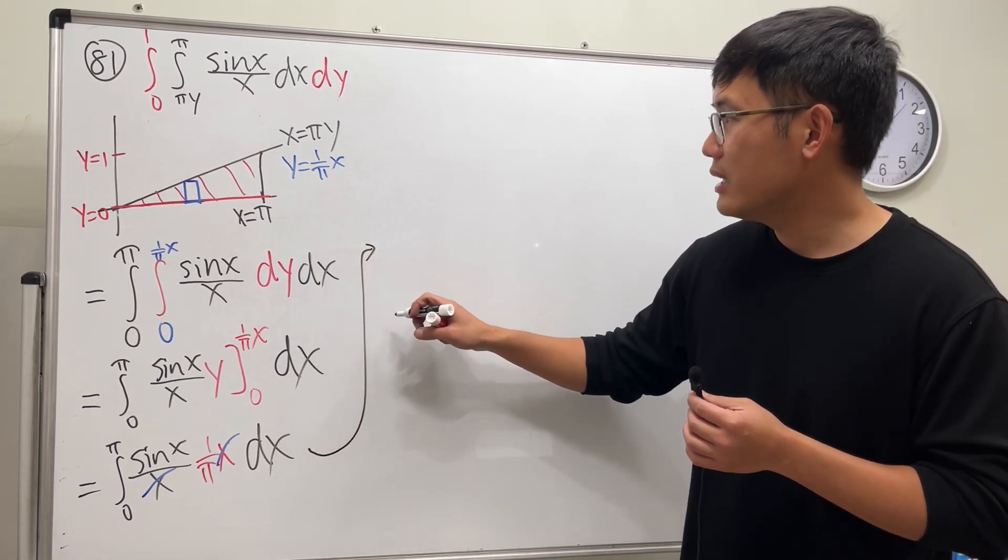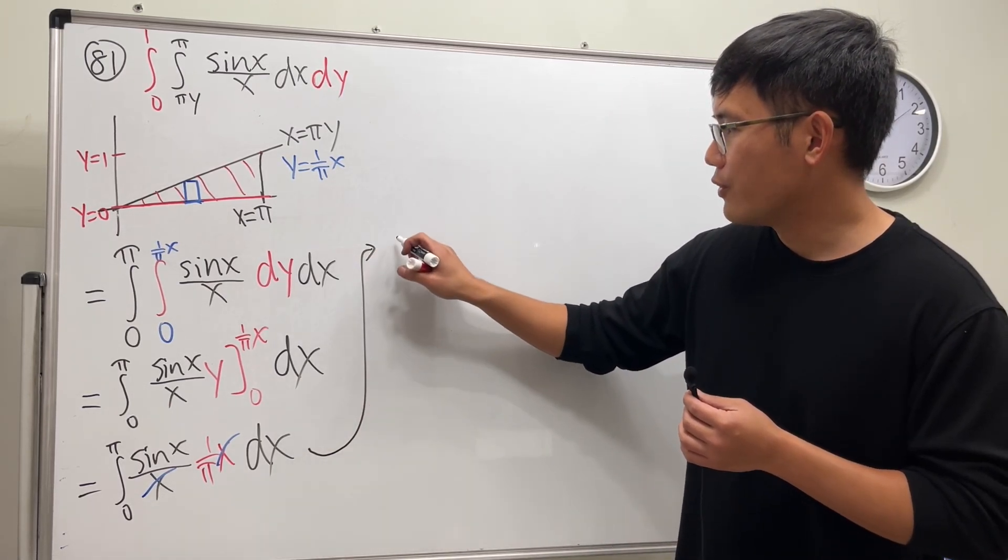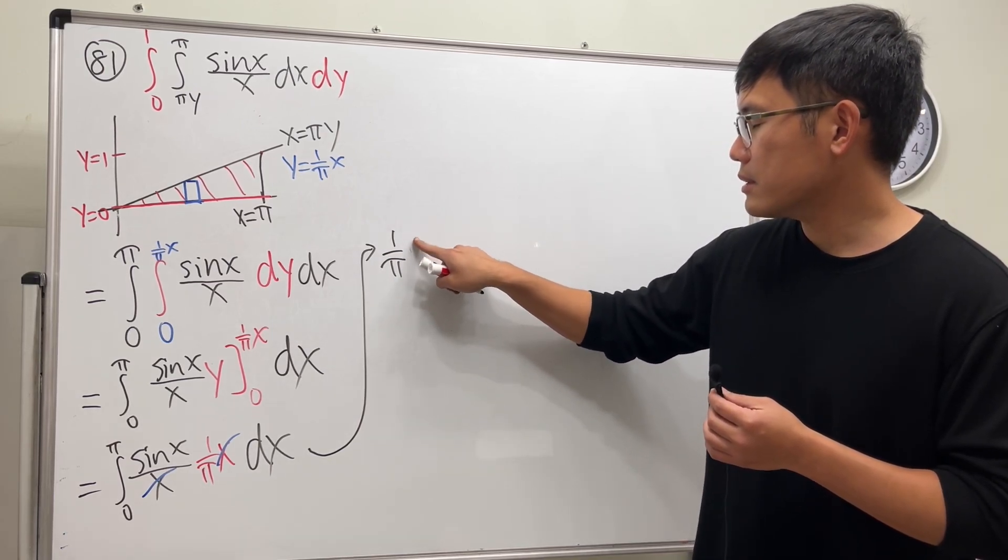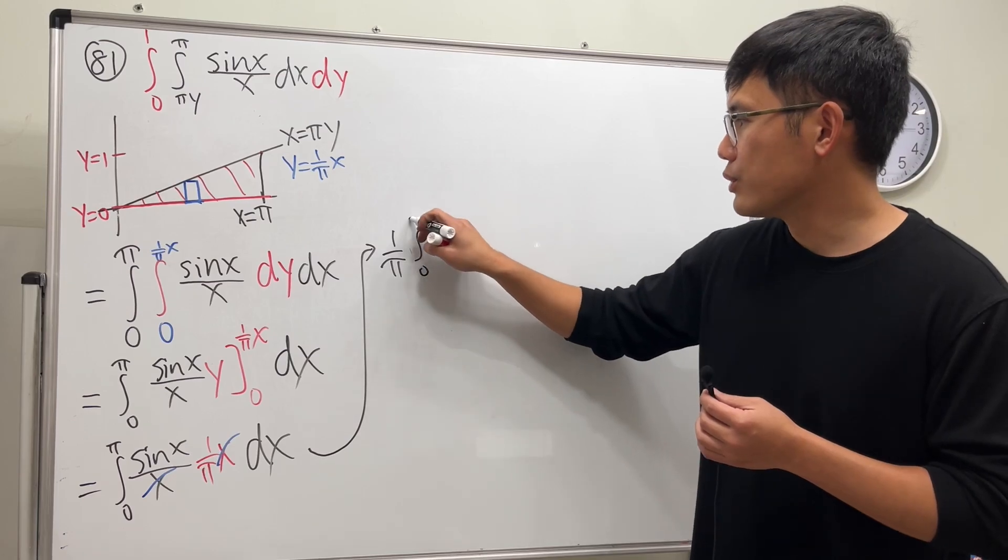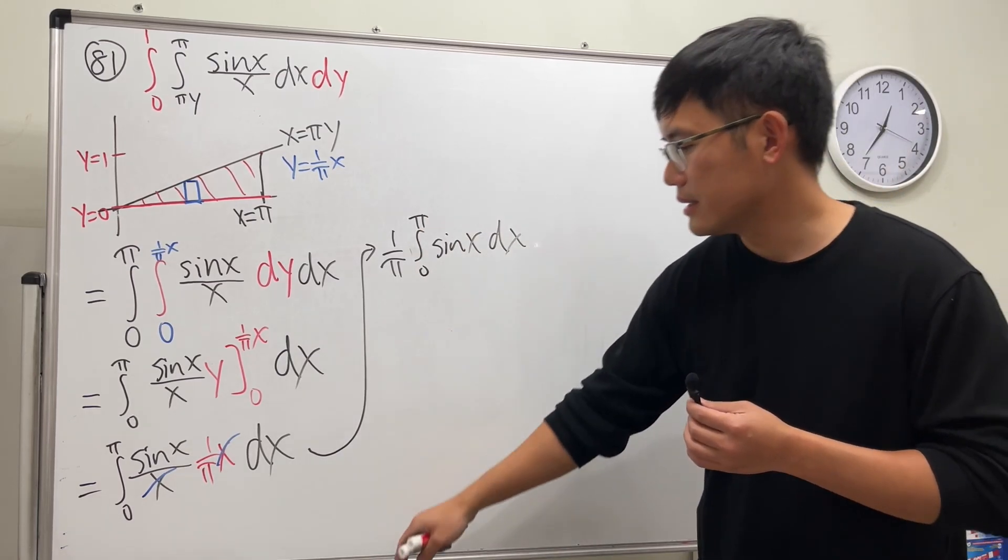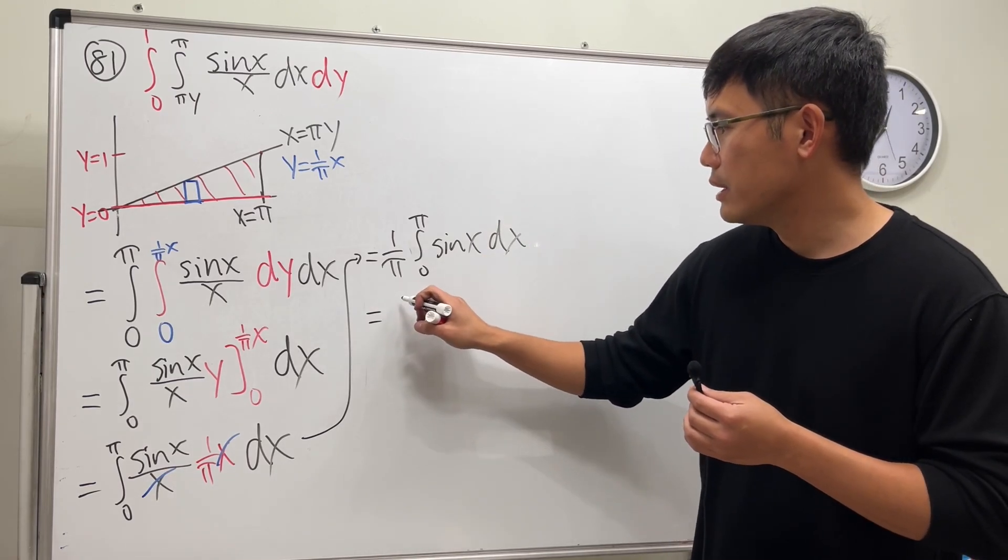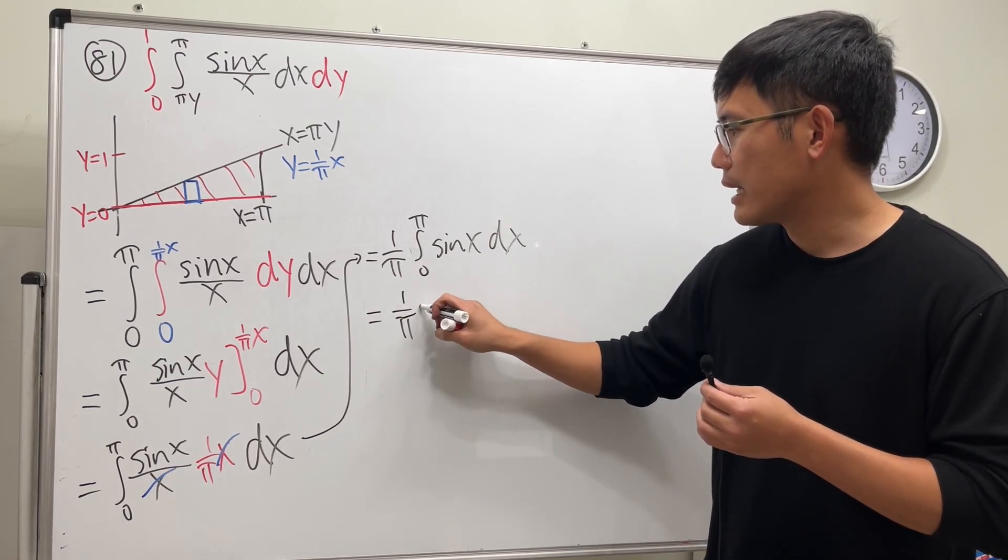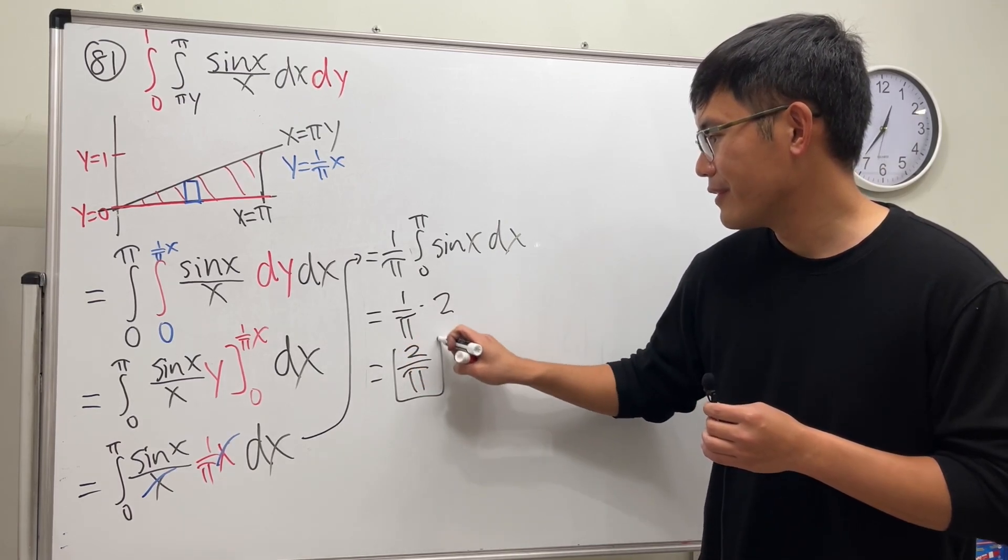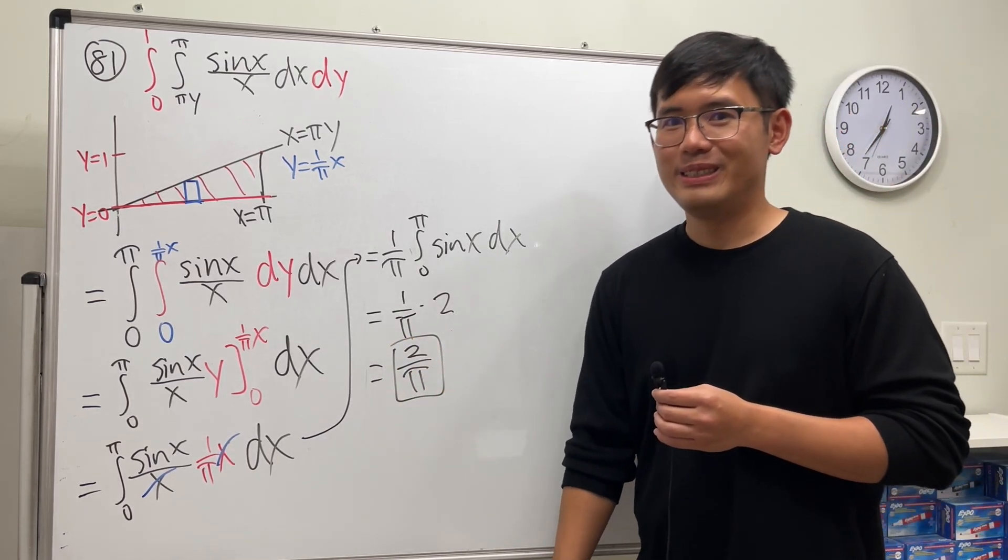And we will get one over π at the front, and then integral going from zero to π, sin x dx. Right? Work this out on your own. This is one over π times two, so we get two over π. Yeah, just like that.